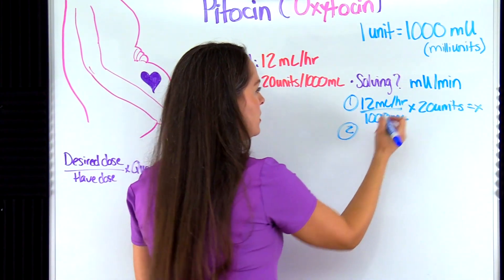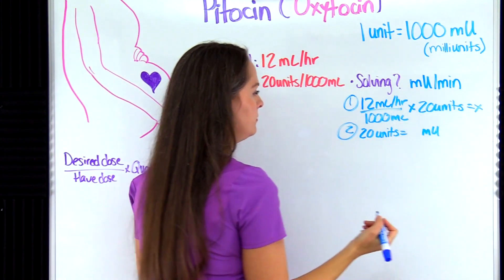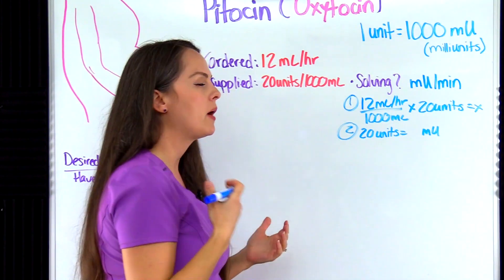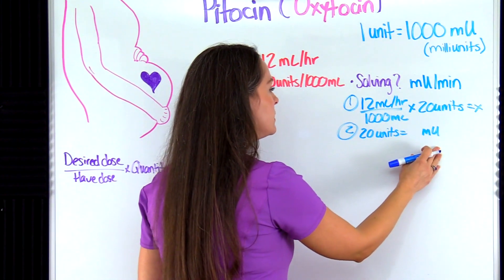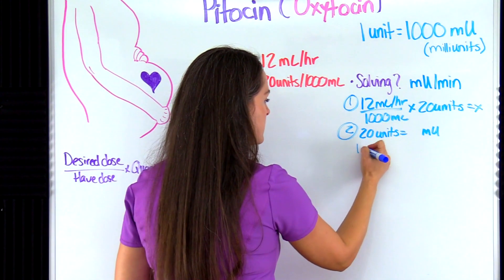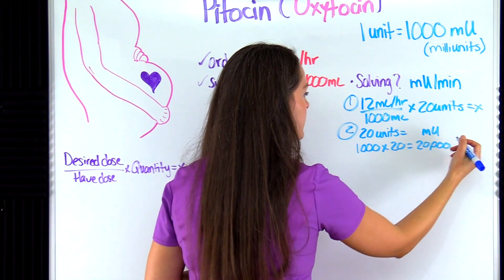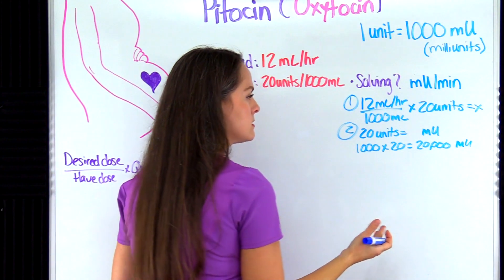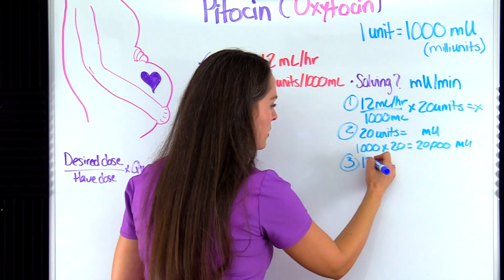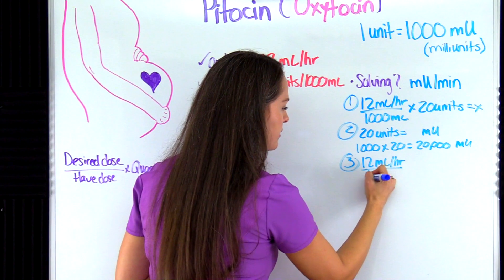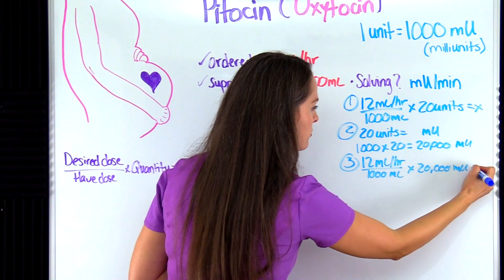So 20 units is equivalent to 20,000 milliunits. Now I'll plug that new information into the original formula: 12 milliliters per hour over 1000 milliliters, times 20,000 milliunits, equals x.